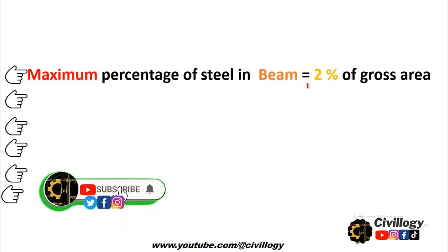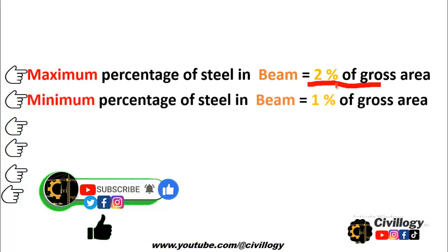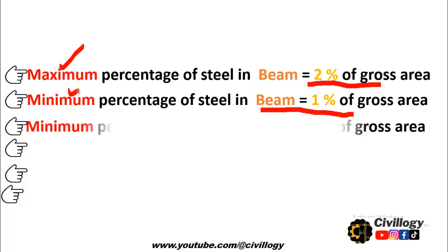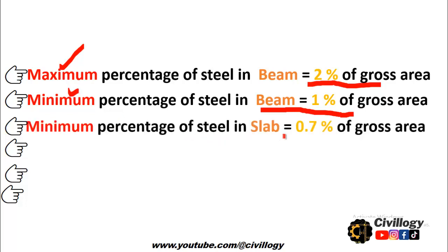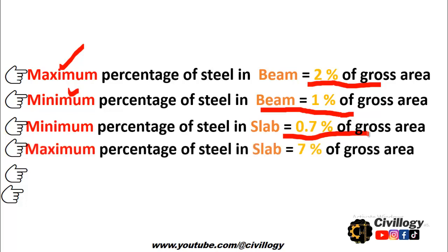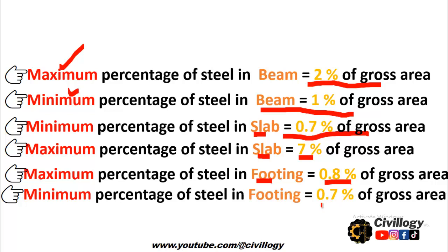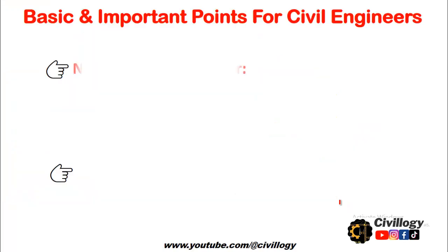The maximum percentage of steel in a beam is equal to 2 percent of gross area, and the minimum percentage of steel in a beam is equal to 1 percent of gross area. The minimum percentage of steel in a slab is equal to 0.7 percent of gross area, and the maximum percentage of steel in a slab is 7 percent - so it ranges from 0.7 to 7 percent for slabs. The maximum percentage of steel in footing is equal to 0.8 percent and the minimum is 0.7 percent.